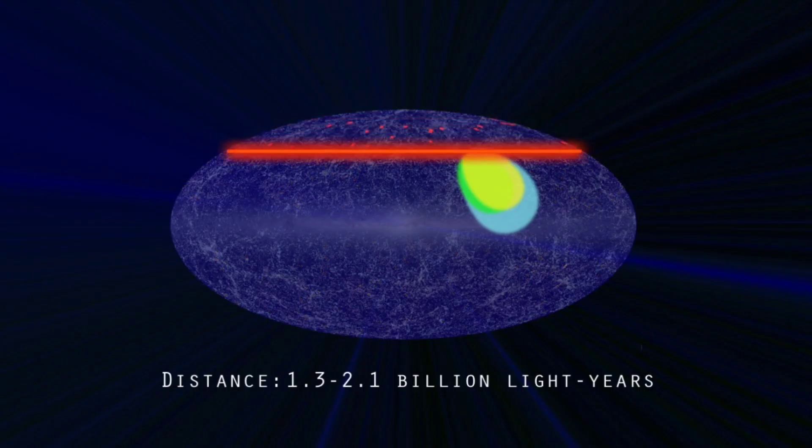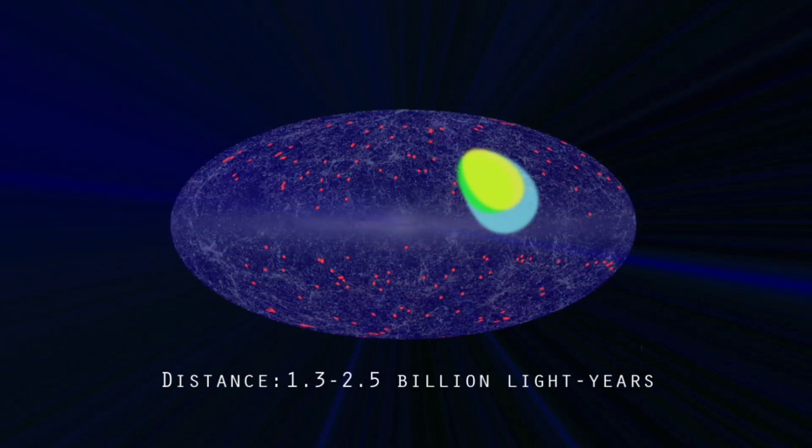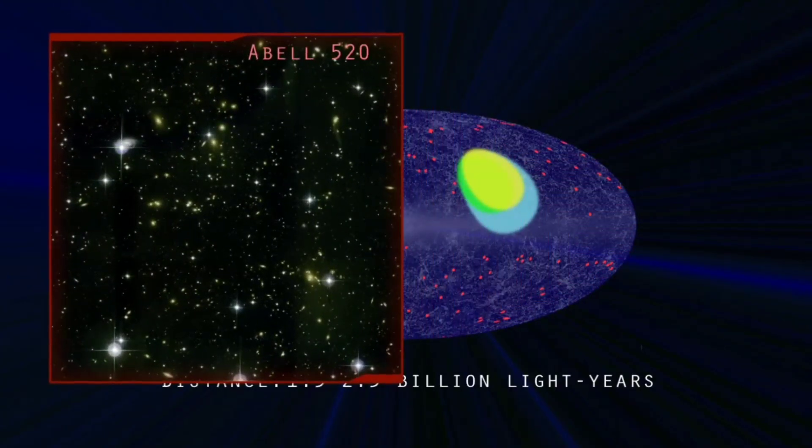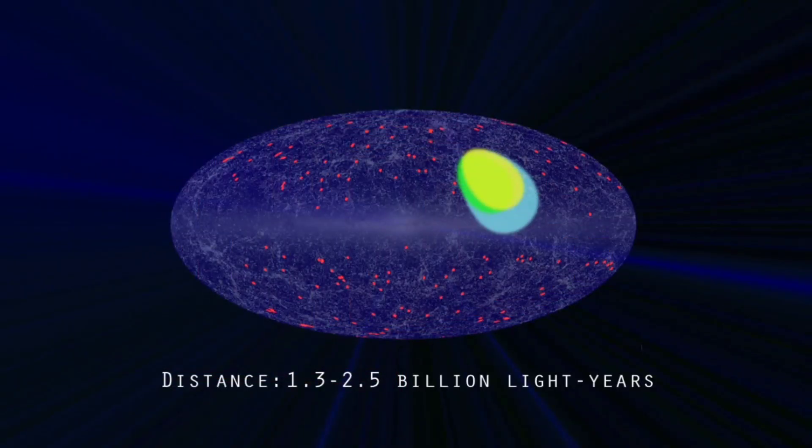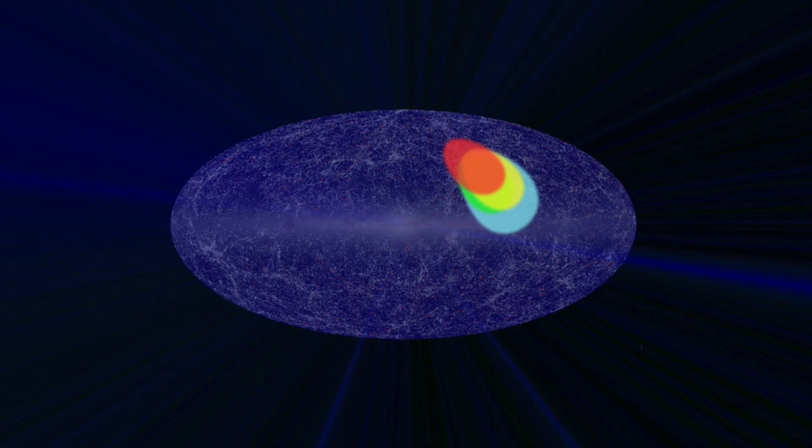The Wilkinson Microwave Anisotropy Probe, during a three-year survey, discovered a large group of clusters which all seemed to be moving in a roughly uniform direction at speeds up to 600 miles per second. They were all headed towards a small area of sky between the constellations Centaurus and Vela.